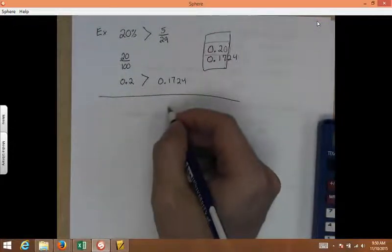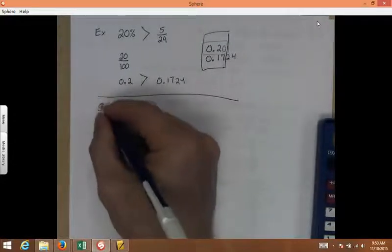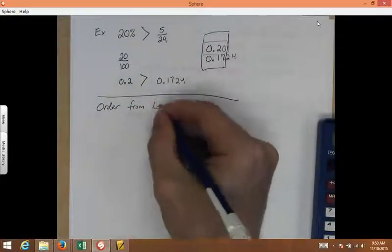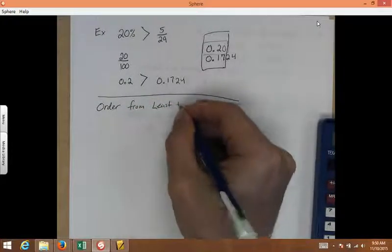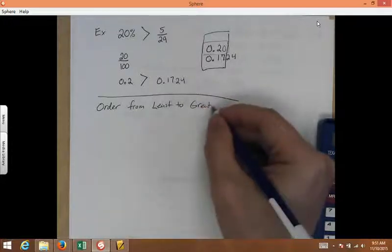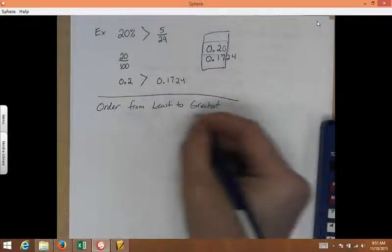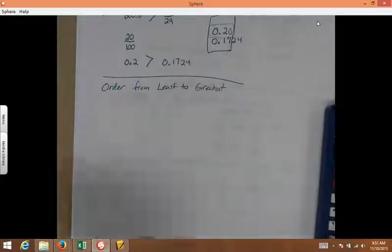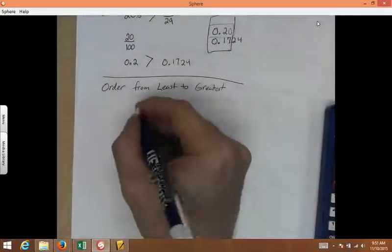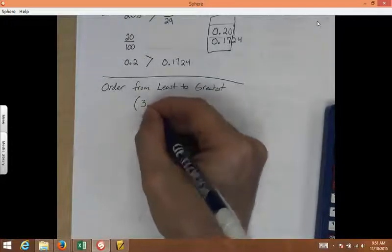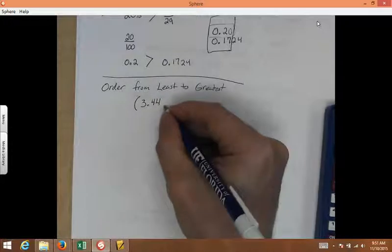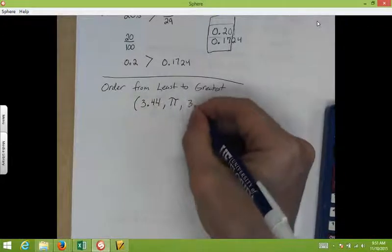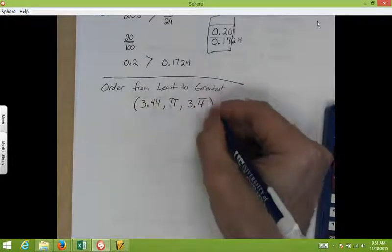Another example. Sometimes they're going to want you to order things. So, let's say the question says order, and a lot of times they like to say from least to greatest. Sometimes it's the other way around, so make sure that you're reading these directions. If it says greatest to the least and you do it backwards, you'll get it wrong. So, let's say we had the following numbers. Let's say we had 3.44, pi, and 3.4 with bar notation over that 4.